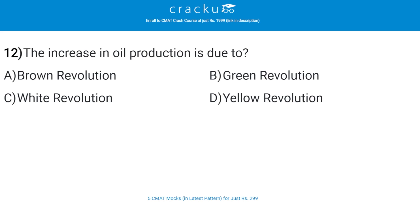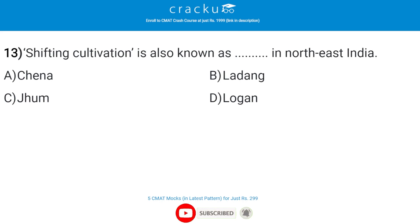The increase in oil production is due to the — correct answer is D — Yellow Revolution. Shifting cultivation is also known as dash in Northeast India — the correct answer is C — Jhum. Jhum is an agriculture system where a farming community slashes secondary forest on a predetermined location, burns the slash, and cultivates the land for a limited number of years.